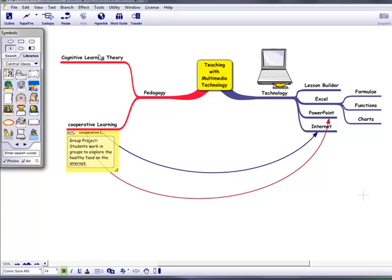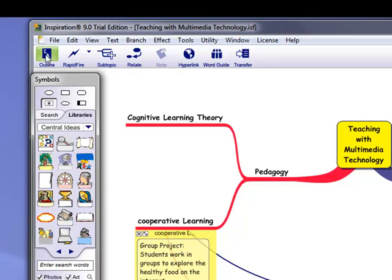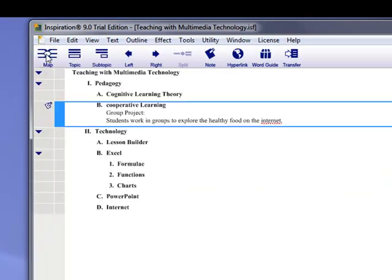And you can, of course, add more. And the other is, so we talk about the visual learner. But some other students, they are not that good at looking at the images. They prefer to see an outline. So here you click the outline button.